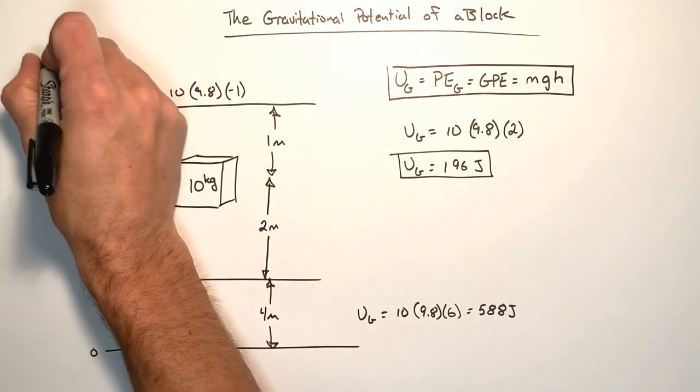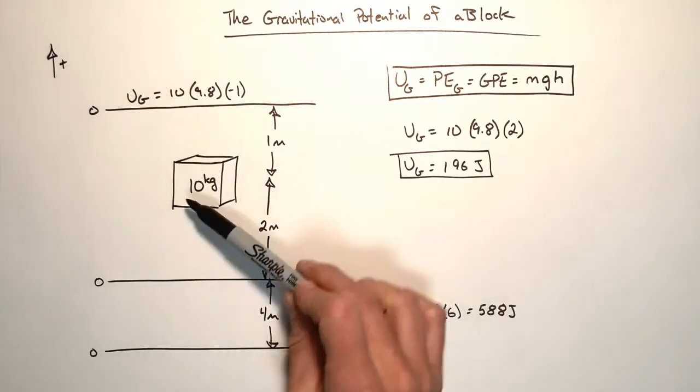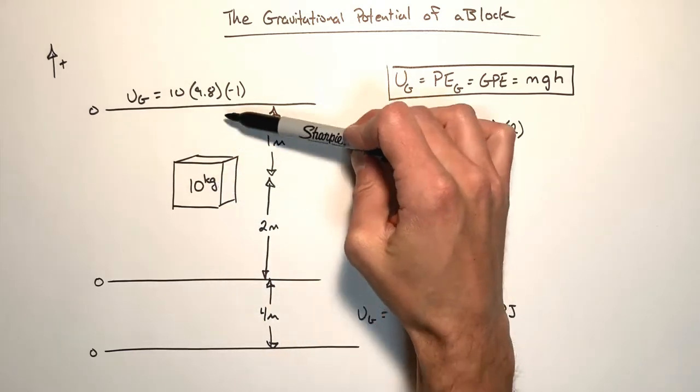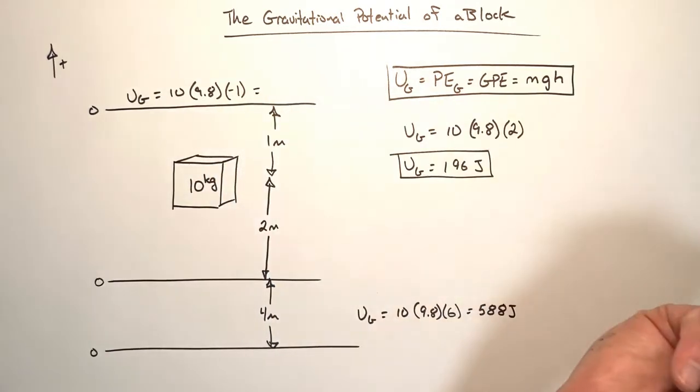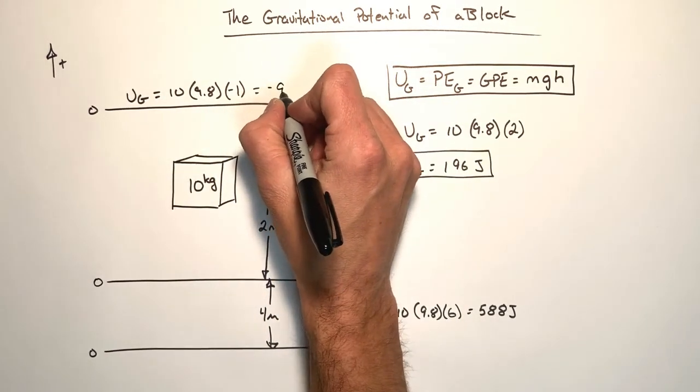Why negative one? Well, because we're saying up is positive. Realize we've been doing that the whole time. We've been saying if the block was above the floor, it had some positive height. Well, this time the block is below the floor. So it has some effective negative height. So in this case, we're going to find the gravitational potential energy is negative 98 joules.